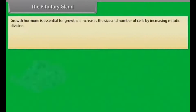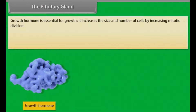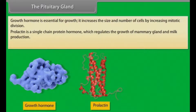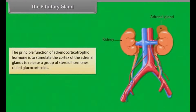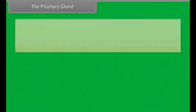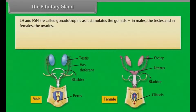Growth hormone is essential for growth; it increases the size and number of cells by increasing mitotic division. Prolactin is a single chain protein hormone which regulates the growth of mammary glands and milk production. Thyroid stimulating hormone stimulates the thyroid gland to produce thyroid hormone. The principal function of adrenocorticotrophic hormone is to stimulate the cortex of the adrenal glands to release glucocorticoids. LH and FSH are called gonadotropins as they stimulate the gonads — the testes in males and the ovaries in females.